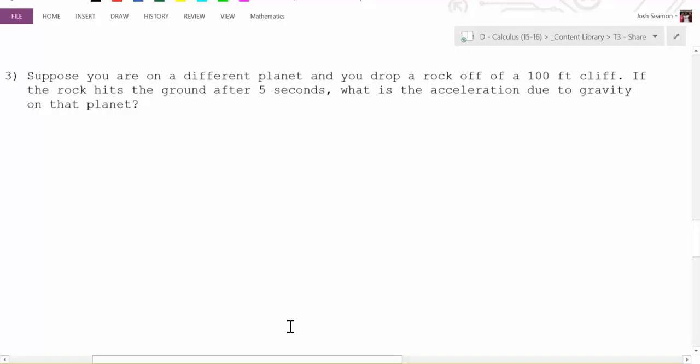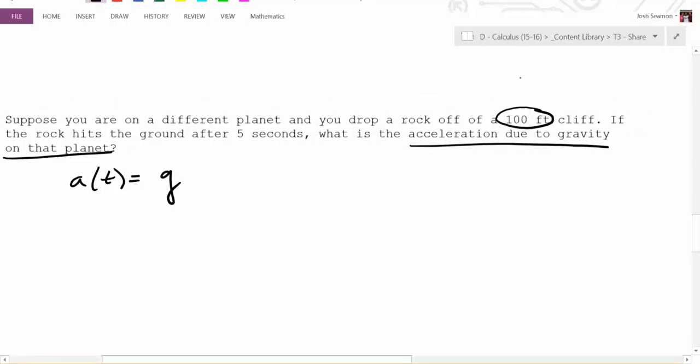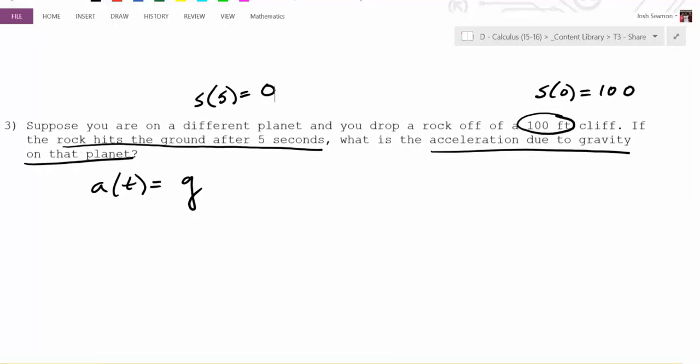What variable do you want to use? g is good? So we're going to say the acceleration due to gravity at time t is going to be equal to g. We have no idea what it is, correct? If we wanted to solve this, we only know time it takes and distance. So what does this tell us? It says you drop a rock off a 100-foot cliff. So if you drop it off of a 100-foot cliff, what does that tell you? Does that tell you a velocity, acceleration, or position? Position. At time what? So it's position at 0 is 100. If the rock hits the ground after 5 seconds, so what does that also tell us? S of 5 is equal to 0. If we say 100 is where it starts, 0 is where it is.